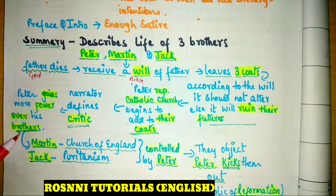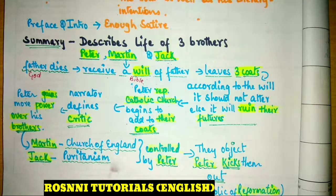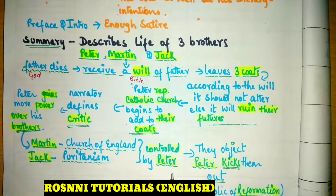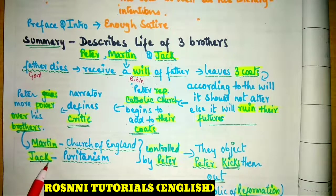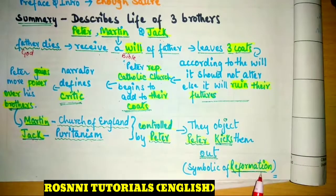After getting power, Peter tries to dominate Martin and Jack. Martin represents the Church of England and Jack represents Puritanism. Both of them are controlled by Peter, or the Catholic Church. They object to Peter. These two brothers could not tolerate Peter, and they planned to not listen to him. Peter became very angry and kicked out both brothers — Martin and Jack. This shows reformation, or transformation from one identity to another.